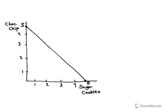Now let's talk about what we could say of a point that is on the PPC. So let's pick this point here at three chocolate chip and two sugar cookies and we'll call that point A. So what could we say about point A? Well we could say that point A is efficient. So what does it mean to be efficient on the PPC? Well that means we are using all resources.